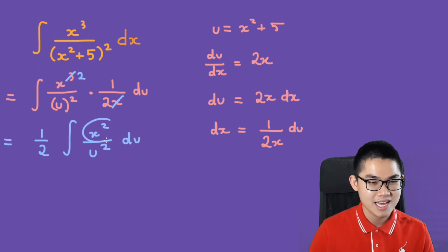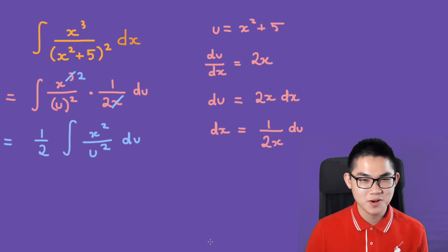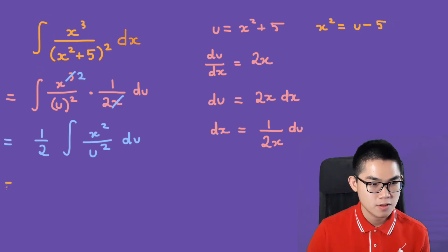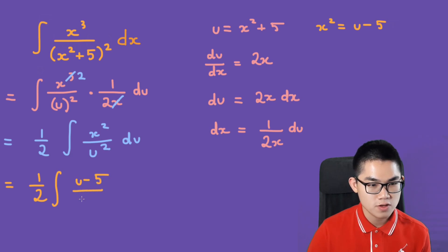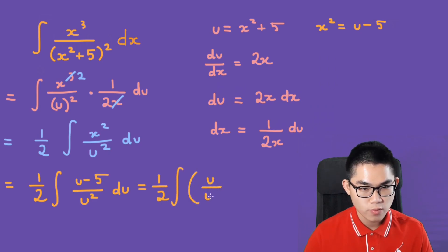At this point, what is x squared? Since u equals x squared plus 5, x squared equals u minus 5. Substituting, we get 1 over 2 times the integral of u minus 5 over u squared du. This is the same as 1 over 2 times the integral of u over u squared minus 5 over u squared, du.